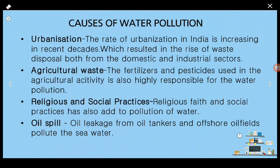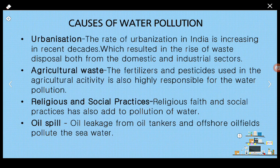Secondly, agricultural waste. In modern times, lots of fertilizers and pesticides are used to get good crops. Those fertilizers and pesticides get drained during the rainy season through overflow of water from agricultural fields. They then join the rivers and ultimately pollute the water. That is how agricultural waste is responsible for causing water pollution.